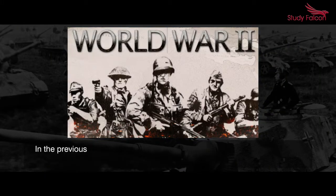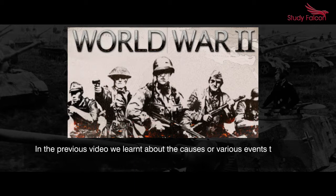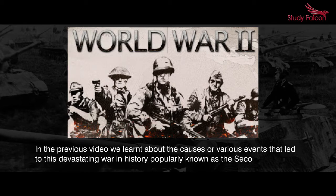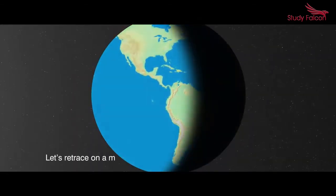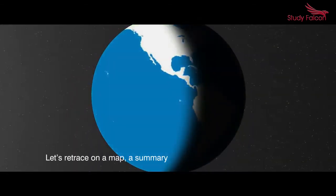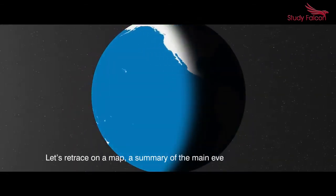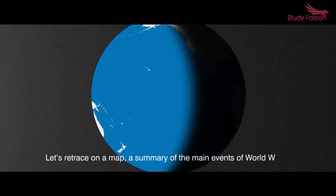In the previous video we learnt about the causes or various events that led to this devastating war in history, popularly known as the Second World War. Let's retrace on a map a summary of the main events of World War II.